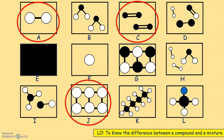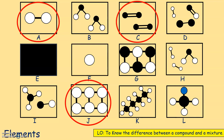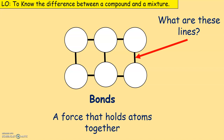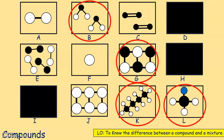Elements have bonds holding their atoms together — remember when we discussed states of matter, we talked about forces and bonds holding atoms together. The same applies to elements. C has a double bond, which you'll learn about in Year 10 or college chemistry. Those lines represent bonds — forces that hold atoms together. Now what is a compound? Look at B, G, K and L — you can see they have different types of atoms.